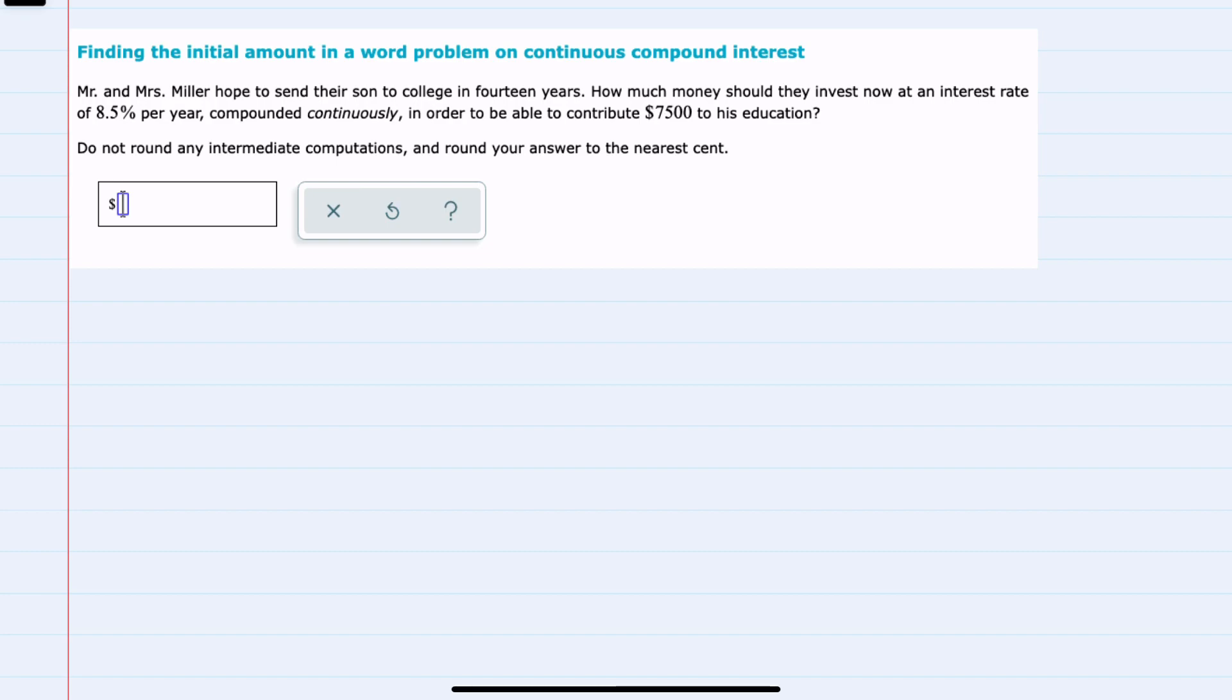In this example, we're told that Mr. and Mrs. Miller hoped to send their son to college in 14 years. How much money should they invest now at an interest rate of 8.5% per year, compounded continuously, in order to be able to contribute $7,500 to his education?